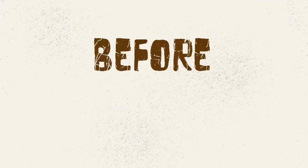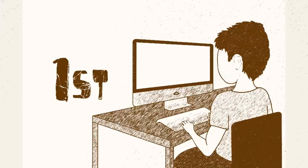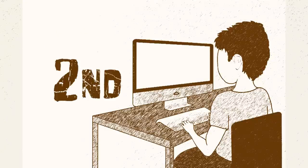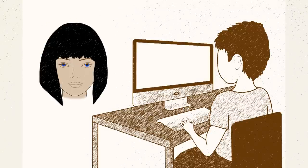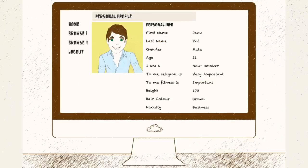Here are the basics of the experiment. Firstly, before the experiment day, you're registered by doing three things. One, you'll tell us a few things about yourself — your age, your hair colour, eye colour. Two, you'll tell us a few things about your ideal partner — eye colour, hair colour, age. And three, you'll upload a photo of yourself.